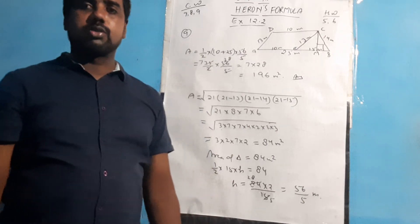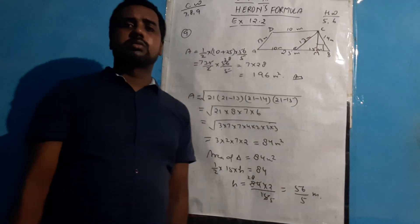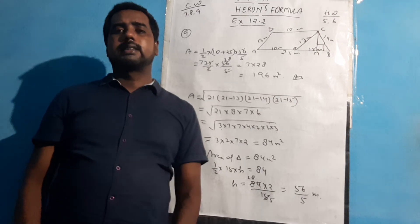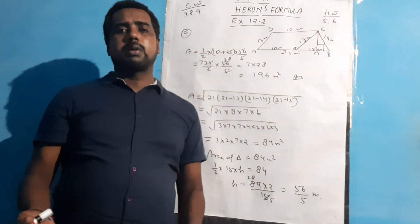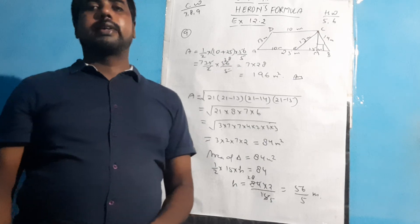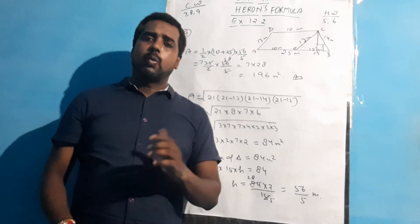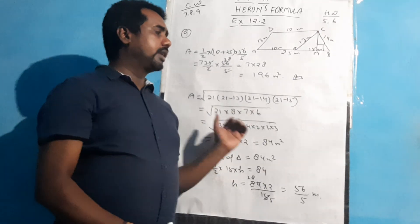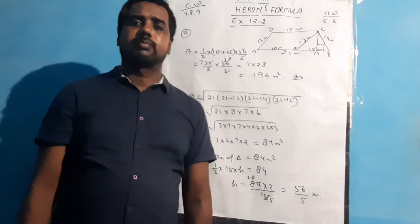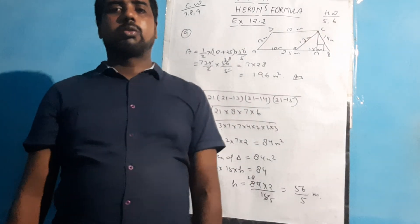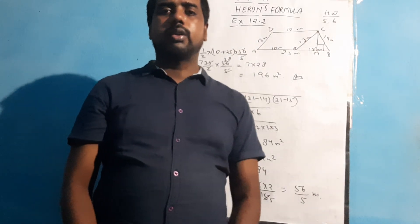I hope you have understood how to apply Heron's formula to find the area when sides are given. Heron's formula is applicable for equilateral triangles, isosceles triangles, and scalene triangles — wherever the sides are given, you can use it. This is all about Heron's formula. Stay safe, stay happy. Thank you.